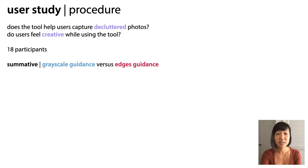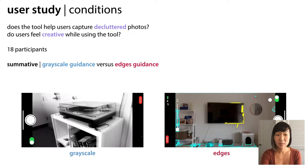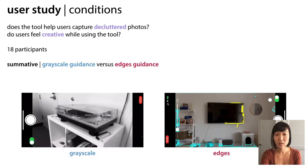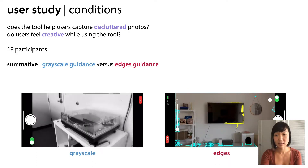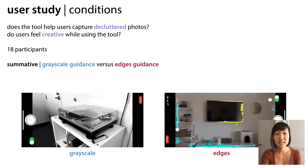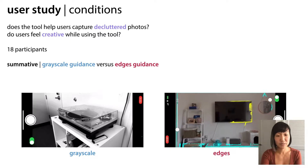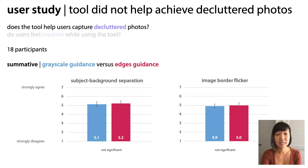We ran remote studies over Zoom with 18 participants to understand if the tool would help users declutter photos and if they felt creative while using the tool. Users experienced two different conditions: one with the grayscale overlay, and a second highlighting the edges along with subject and image borders. For each photo, we asked participants to self-assess them based on subject-background separation and image border flicker. We actually did not see a significant improvement in overall quality in terms of these principles.